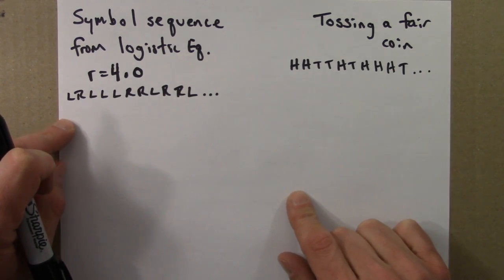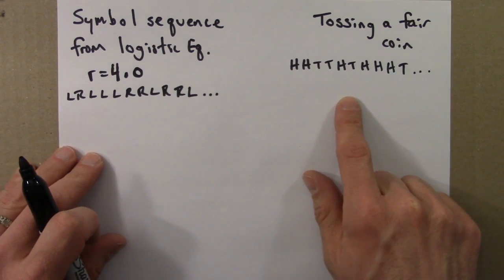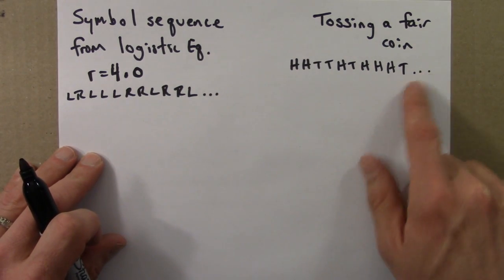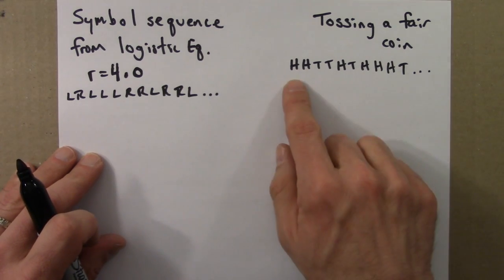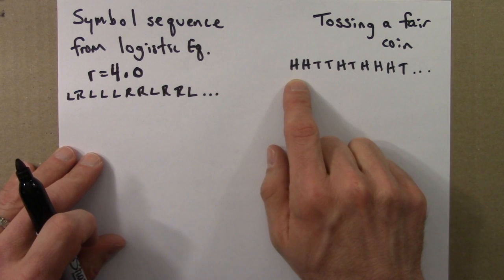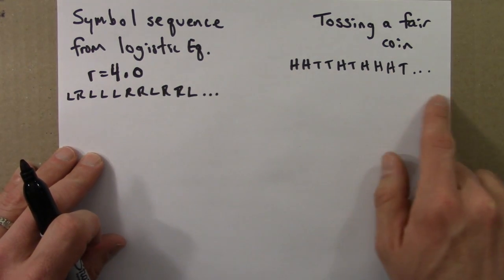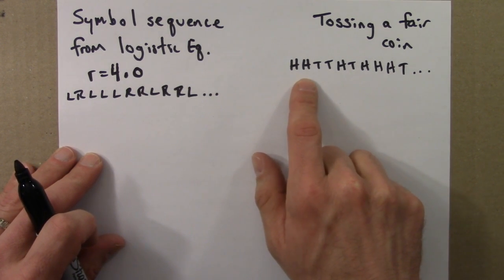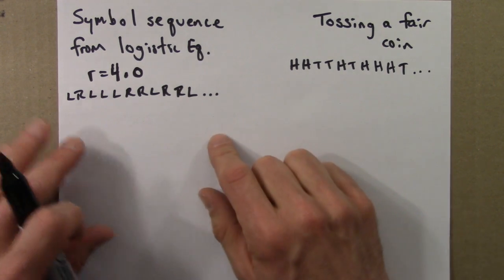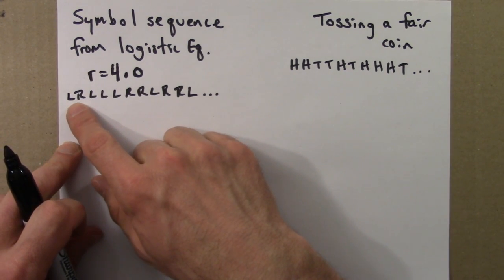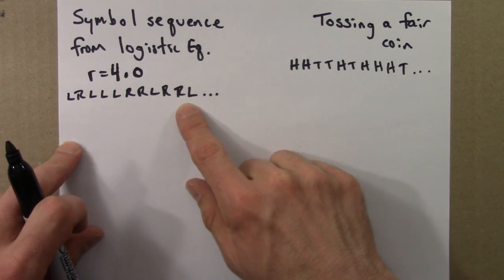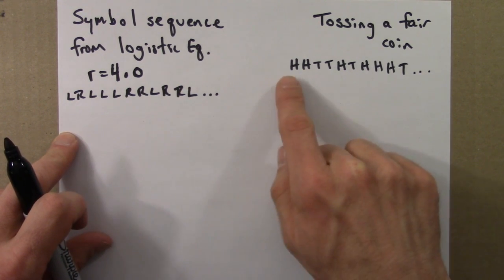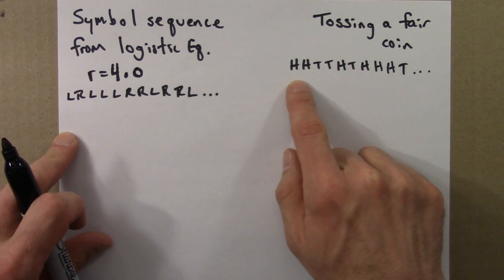I'm going to imagine doing two experiments side by side. One experiment involves tossing a fair coin many, many times — outcomes are heads and tails, each with probability one half, and the tosses are independent, meaning the outcome of one toss has no influence on the outcome of the next. The other experiment generates a symbol sequence from the logistic equation orbit, converting it to L's and R's, and I want to compare the statistical features of these L's and R's to the H's and T's.